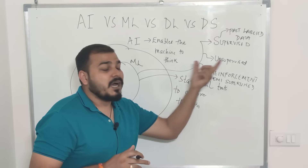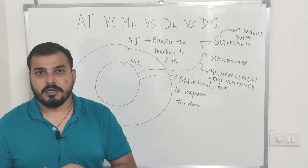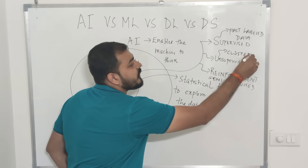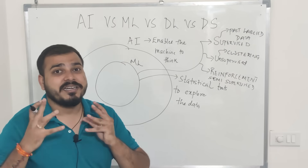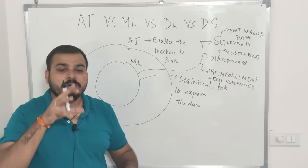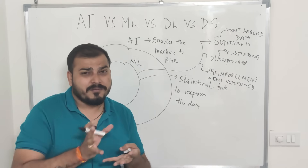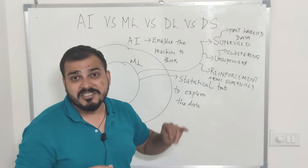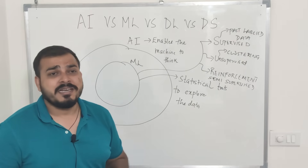In unsupervised machine learning, there is no labeled data — we don't know what the output is. We usually solve clustering problems. There are different clustering techniques like k-means clustering and hierarchical clustering. Based on the similarity of the data, clustering groups that data together using mathematical concepts like Euclidean distance. Three popular clustering algorithms are k-means clustering, hierarchical clustering, and DB scan clustering.